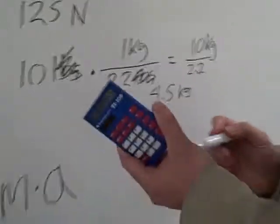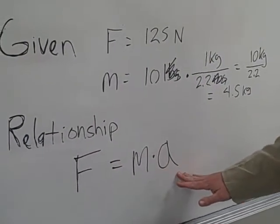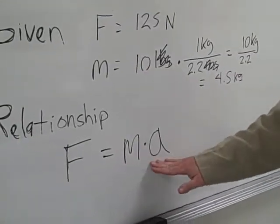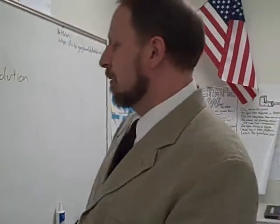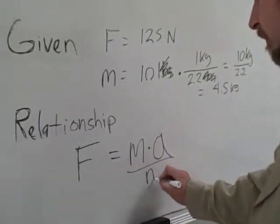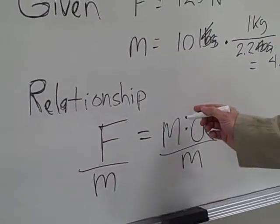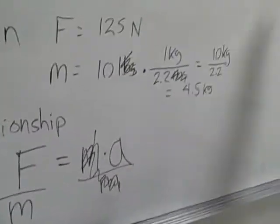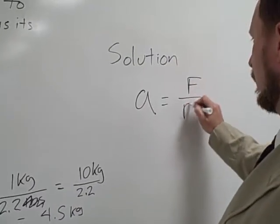Ignore this calculator garbage. Now I see another problem. I see F, I see M, I see A — but I'm looking for A. It looks like M is getting in the way of me getting to A. Therefore M has to go. I'm going to rearrange my equation. I divide both sides by M — it's time for cancellation, one of my favorite things to do. So we go back and solve: A equals F over M.